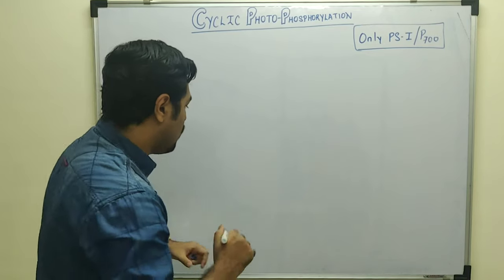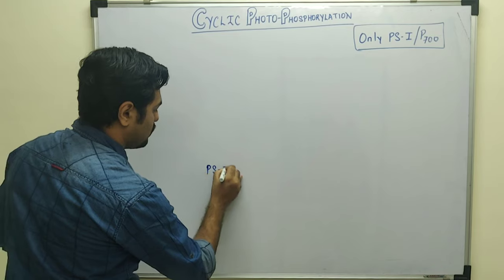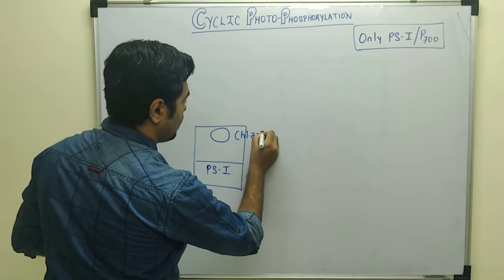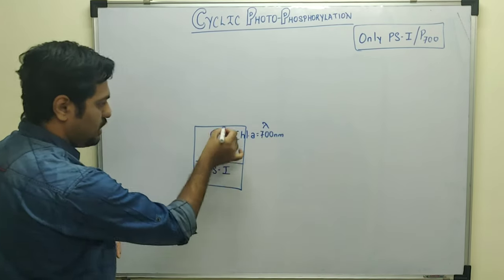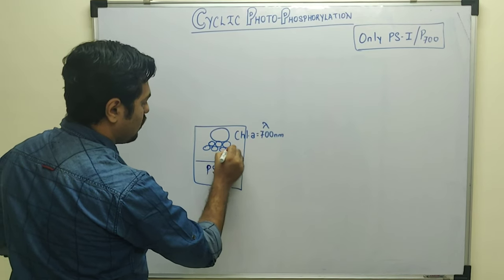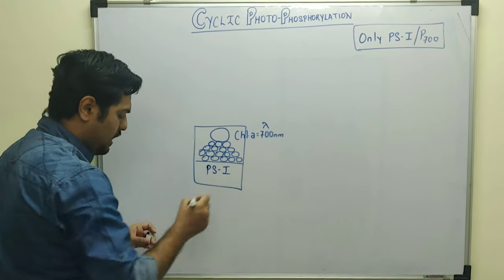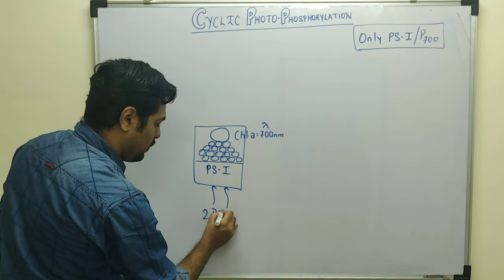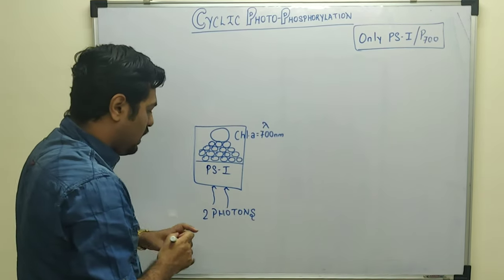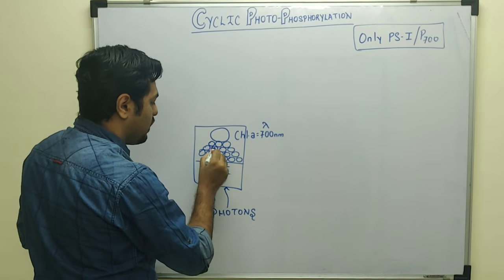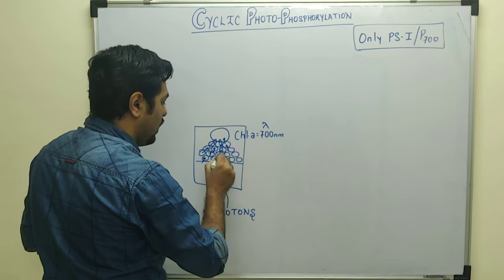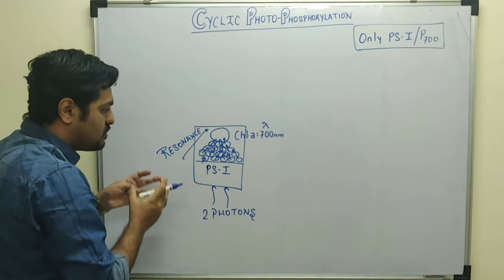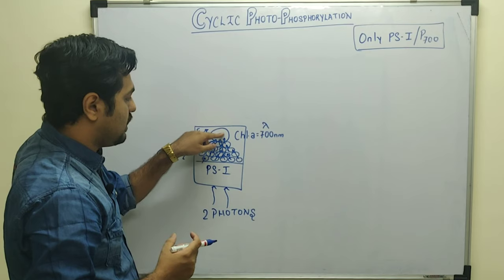Since this process involves only PS1, let me describe PS1 and its reaction center. PS1 has a reaction center — a chlorophyll A molecule — which can absorb 700 nm wavelength of light. The rest of the complexes are composed of accessory pigments, including the light harvesting complex. PS1 absorbs exactly two photons. When these two photons are absorbed, their energy is transferred via resonance to the reaction center chlorophyll A 700.